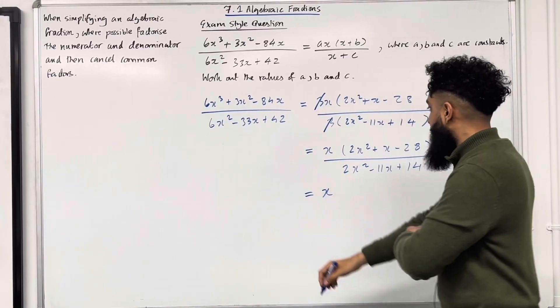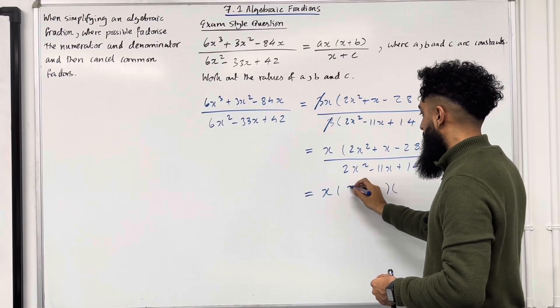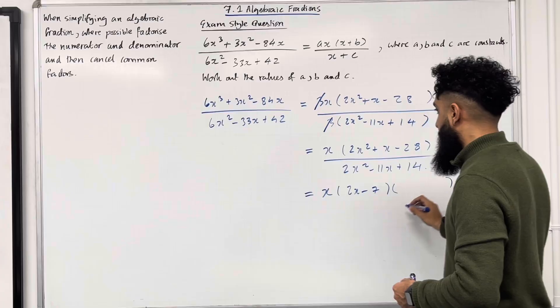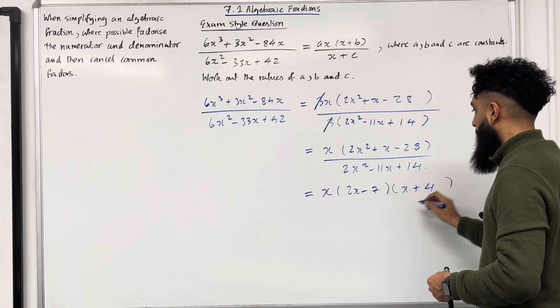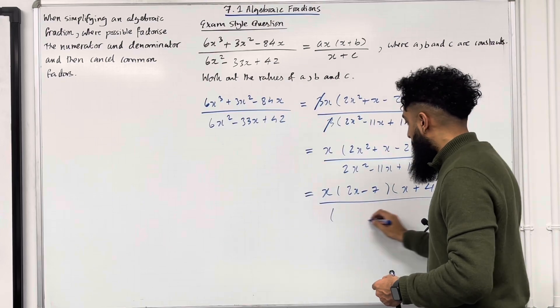The factorisation of this will just be 2x minus 7 and x plus 4, all over. In the denominator, the factorisation of this will be double brackets.